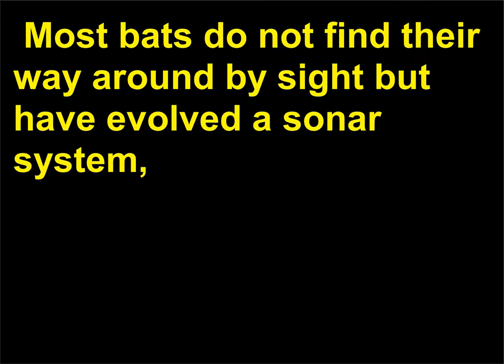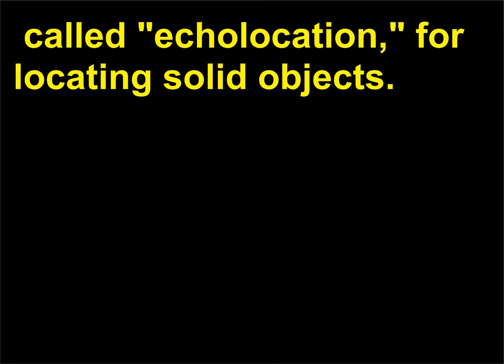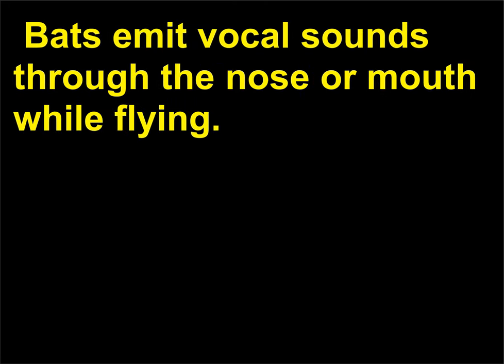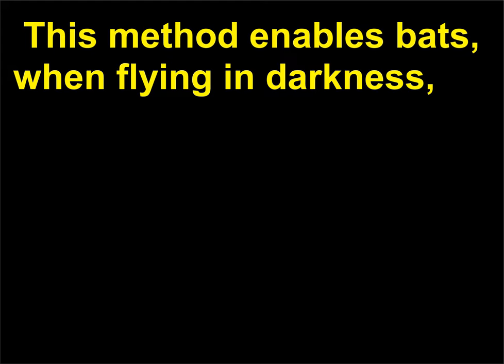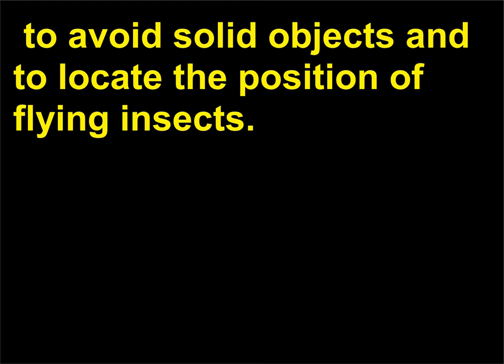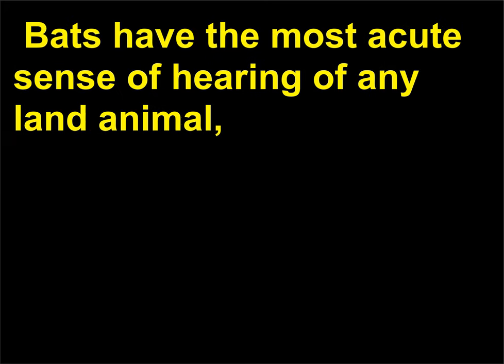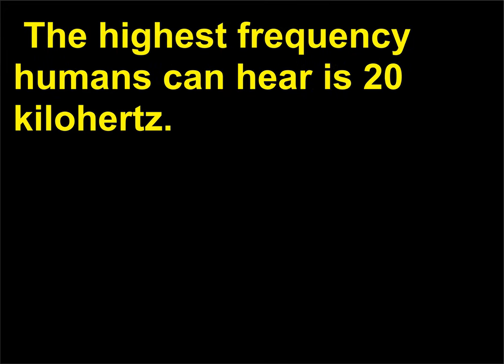Most bats do not find their way around by sight but have evolved a sonar system called echolocation for locating solid objects. Bats emit vocal sounds through the nose or mouth while flying. These sounds, usually above the human hearing range, are reflected back as echoes. This method enables bats, when flying in darkness, to avoid solid objects and to locate the position of flying insects. Bats have the most acute sense of hearing of any land animal, hearing frequencies as high as 120 to 210 kilohertz. The highest frequency humans can hear is 20 kilohertz.